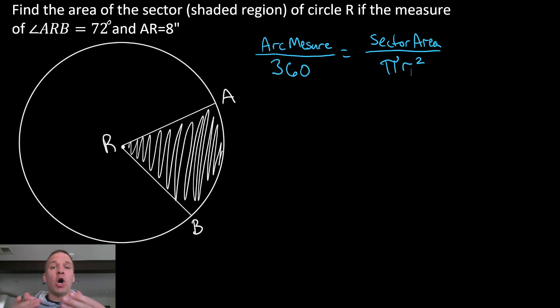It equals my sector area over the area of the entire circle. And if you're like, hey, this looks very similar to arc length, it is basically the exact same thing. The only thing that's changed out would be, that would be the circumference formula rather than the area formula, and I'd be getting my arc length, not my sector area. So there are similarities there.